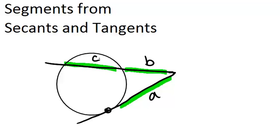And the relationship between those three segments is this: A squared will always equal B times B plus C.